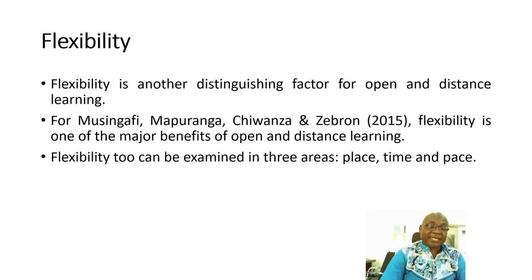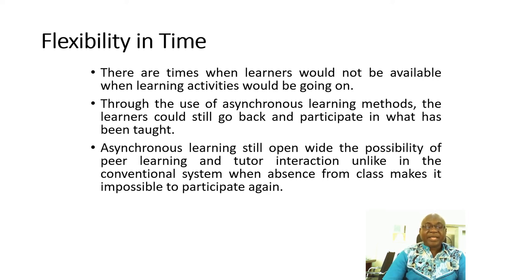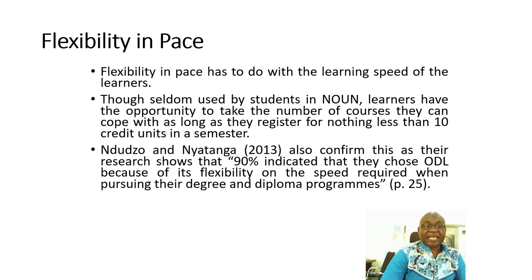Another characteristic of the ODL system is flexibility. Flexibility is a distinguishing factor that can be examined in three areas: time, place, and pace. When we talk about flexibility in time, we mean that there are times when a learner will not be available when the lecturer is online, but the learner can always go back to review the lecture in what we call asynchronous learning. It also allows students to interact with their peers even after the formal facilitation is over. Flexibility in place means learners can learn wherever they are at any point in time. Flexibility in pace has to do with the speed of learners — NOUN allows students to register for as low as 10 credit units in a semester if that is what they can manage.